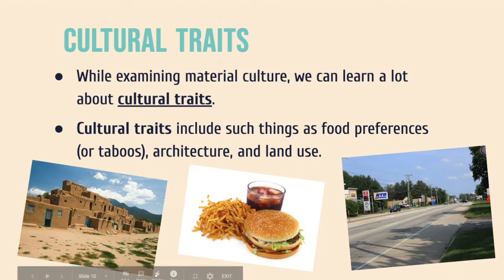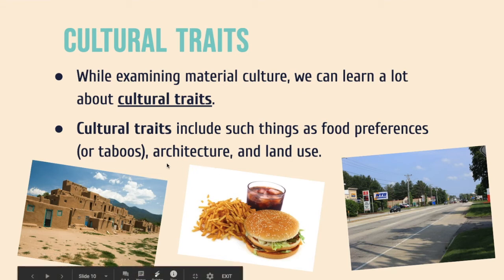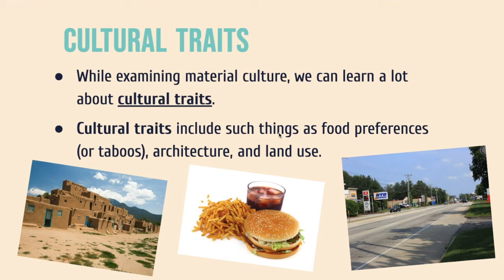So, cultural traits. As we look around our world and see different aspects of culture — things like buildings, architecture, the way stuff is built, the way we use our land, whether for businesses, farming, or residential housing, and food preferences or taboos on food preferences — these are all examples of cultural traits. They give us insight into what that culture actually looks like, what they value, and how they make use of their resources.